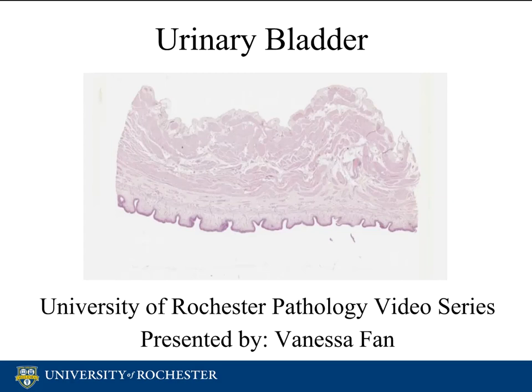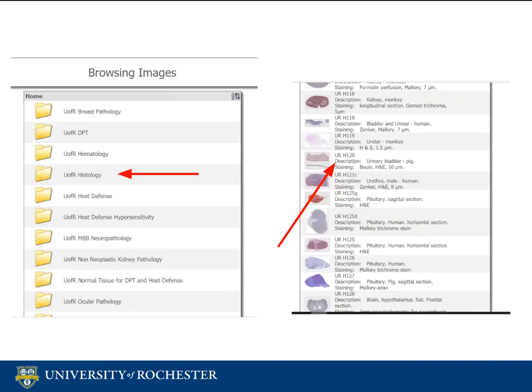Welcome to the University of Rochester's pathology video series. This video will cover the normal histology of the urinary bladder. Access the NanoZoom digital pathology slides available through the U of R histology folder, and locate slide UR H120 to follow along as we discuss the microscopic anatomy of the urinary bladder.